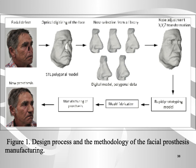This picture shows the design process and methodology of facial prosthesis manufacturing. The first step is data acquisition of the whole face and nose geometry. The second step is virtual reconstruction of the nose and nose adjustment and positioning. This is followed by manufacturing of the nose prototype through rapid prototype technology, then mold fabrication, manufacturing of the silicone prosthesis, and final fitting on the patient's face.